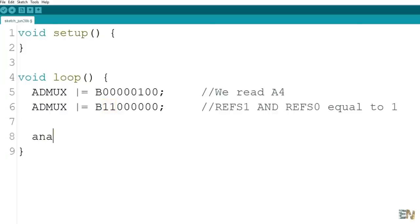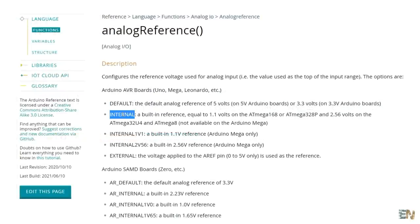If you don't want to use registers, you can also do these lines with this function in the code. Analog reference and then you add the type, which could be any of these values depending on the Arduino model.